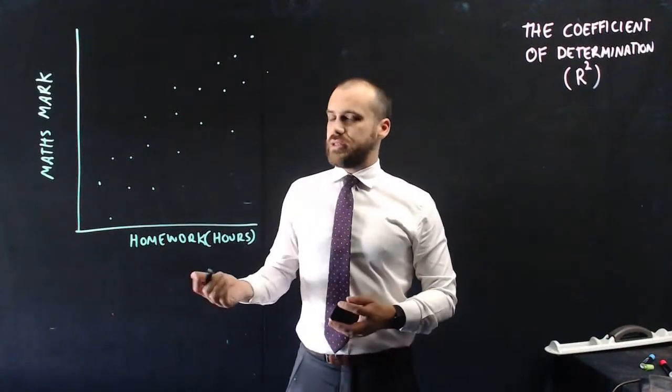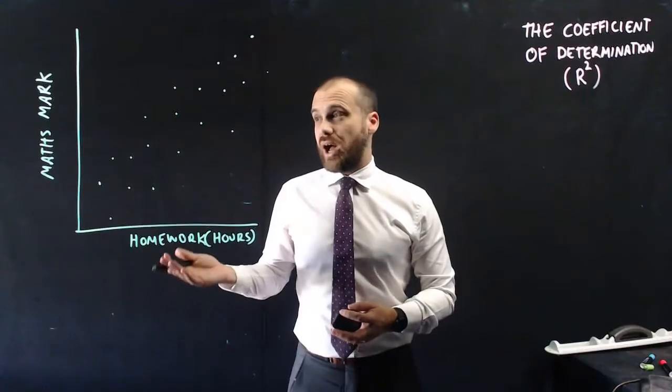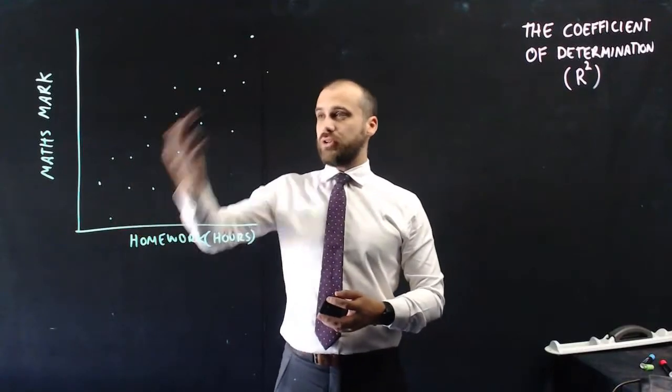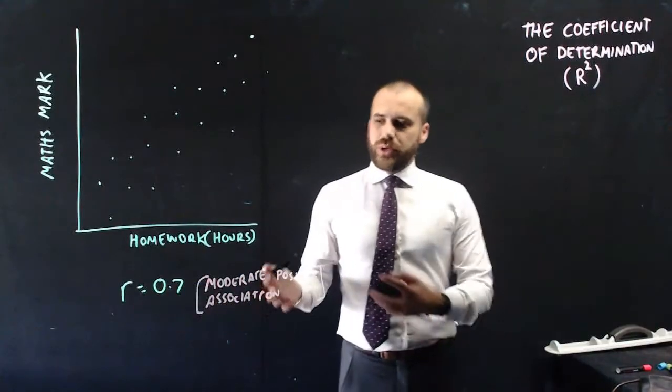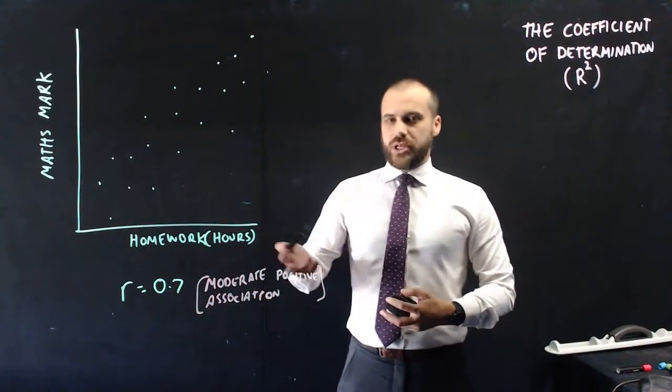So Pearson's r in this case is 0.7. It's correlated, but it's not like a straight line. So let's say 0.7. So r equals 0.7, which we can say is a moderate positive association.